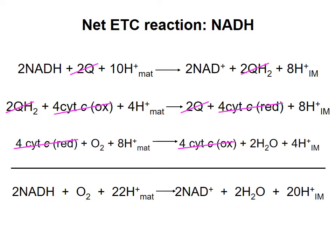What I want you to take away from this is that 20 protons are moved into the intermembrane space for every 2 NADH molecules that give up their electrons to produce molecular oxygen in the electron transport chain. This is a number that you should remember for the test: 20 protons moved per 2 NADH, or 10 protons for every single NADH.